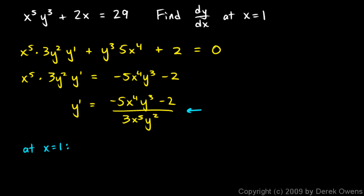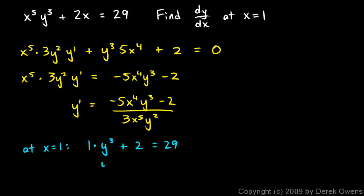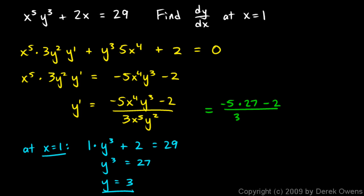At x equals 1, rewriting the original equation: 1 to the fifth times y cubed plus 2 times 1 equals 29. That works out to y cubed equals 27, so y equals 3. Plugging x equals 1 and y equals 3 into the derivative formula: negative 5 times 1 to the fourth times 27, minus 2, all over 3 times 1 to the fifth times 9. This works out to negative 137 over 27.